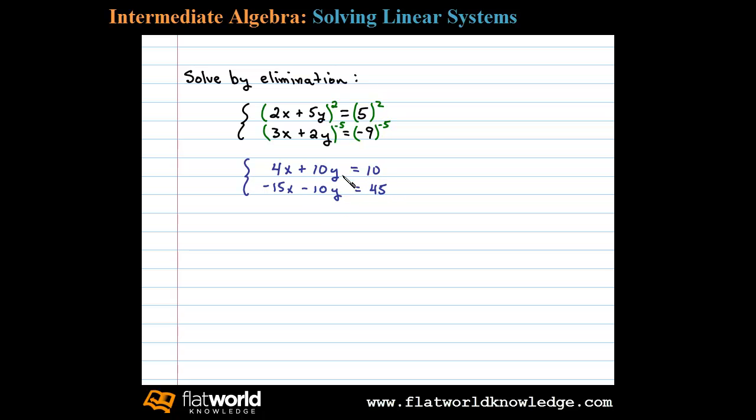We're left with -11x = 55. Notice 10y plus -10y is 0 and the Y is eliminated. Next, dividing by -11, we can solve for X: X = -5.